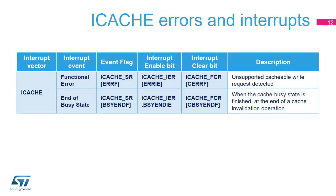The iCache has one interrupt request output but two sources of interrupts: the error detection on cacheable write request flag (ERRRF) and the invalidate operation completion flag (BUSYENDF). Each interrupt source has independent status, enable, and clear bits.